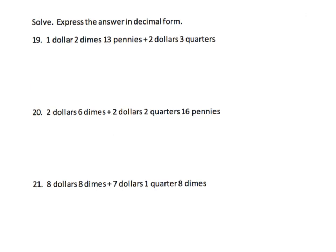On the last slide, students again choose how to organize their thinking. We have: one dollar plus two dimes plus 13 pennies plus two dollars plus three quarters. Using the commutative property, we can group the dollars first: one dollar plus two dollars equals three dollars. Then we have two dimes, so we can set those aside.